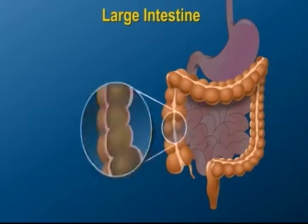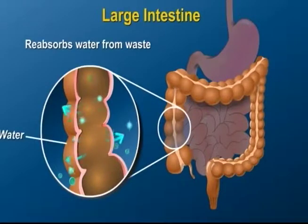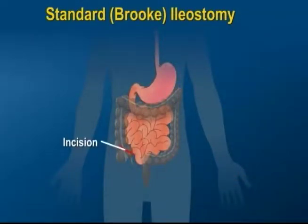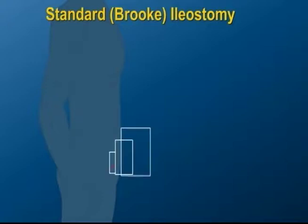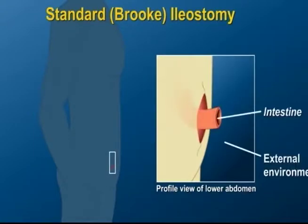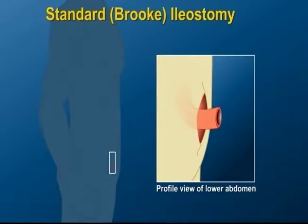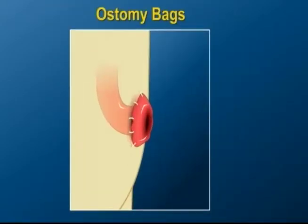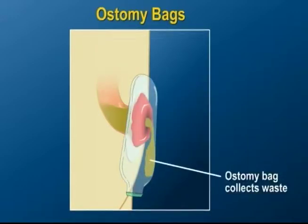Una ostomía es una apertura de una víscera hueca al exterior, generalmente hacia la pared abdominal, pudiendo existir en el aparato digestivo o el urinario. La ostomía digestiva se utiliza para dar salida al exterior del contenido intestinal a través de una apertura en la pared abdominal realizada de forma artificial por un profesional experto. Las ostomías pueden ser temporales o permanentes, y se realizan por etiologías muy diversas.